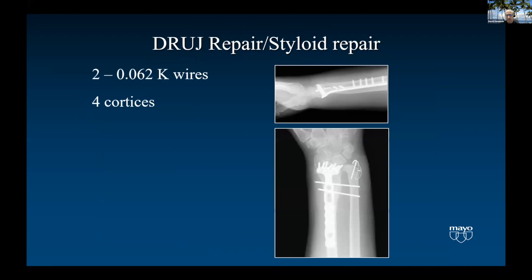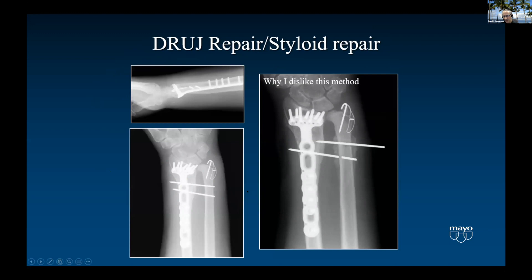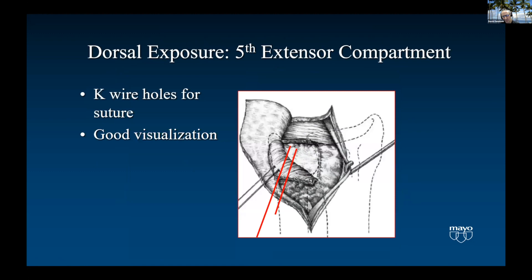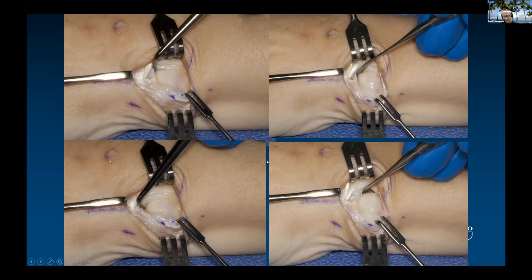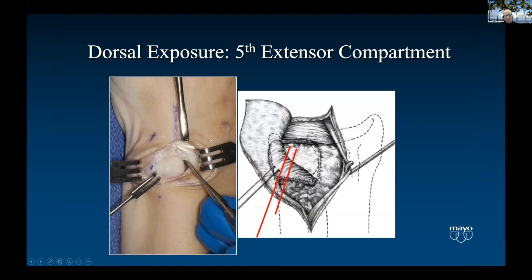K-wires across the radio ulnar joint work but require going through all four cortices because they break. My preference is to stabilize the DRUJ without K-wires. For foveal repair, I prefer the dorsal exposure through the fifth compartment. Release and retract the EDQ, go through the floor with a T-shape incision, protect the ECU, and you have nice visualization down into the fovea — or if you need to fix the ulnar head.